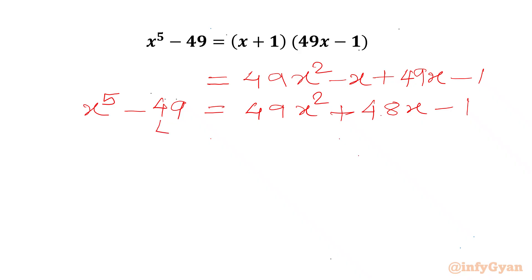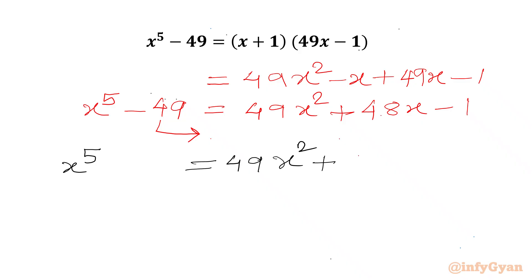Now I will take minus 49 to the RHS. So I can write our equation: x to the power 5 equals 49x squared plus 48x. Since 49 minus 1 gives us 48.